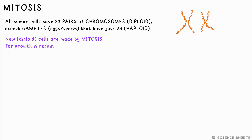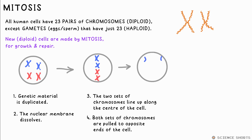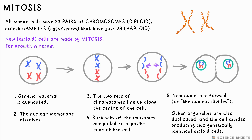New cells must constantly be made for growth and repair. They do this by duplicating through mitosis. Here's the process: the genetic material is duplicated, the nucleus breaks down, and one set of each chromosome pair is pulled to opposite sides of the cell. A new nucleus forms in each of these to house the copied chromosomes. We now have two identical cells. You might hear that the nucleus divides, which isn't quite right, but you'll get the mark if you put that.